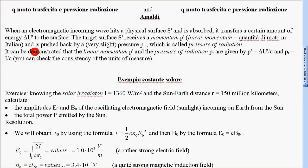It can be demonstrated that the linear momentum P' and the pressure of radiation PR are given by P' equal to ΔU' on C and PR equal to I on C. You can check the consistency of the units of measure.